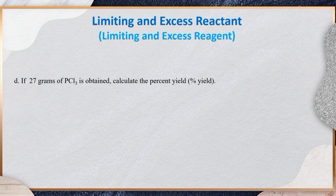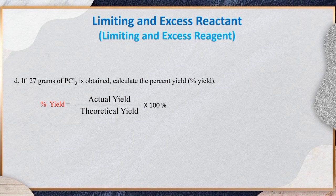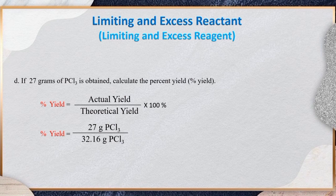For letter D, if 27 g of PCl₃ is obtained, calculate the percent yield. In calculating percent yield, we simply divide the actual yield by the theoretical yield and multiply by 100%. Substituting the values: 27 g PCl₃ / 32.16 g PCl₃ × 100% gives you 83.96%.